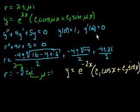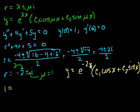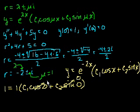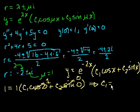Now let's use our initial conditions to find the particular solution. When x = 0, y = 1. Substituting: e^0 = 1, cosine(0) = 1, and sine(0) = 0, so the sine term vanishes. We get 1 = c1·1·1, so c1 = 1.